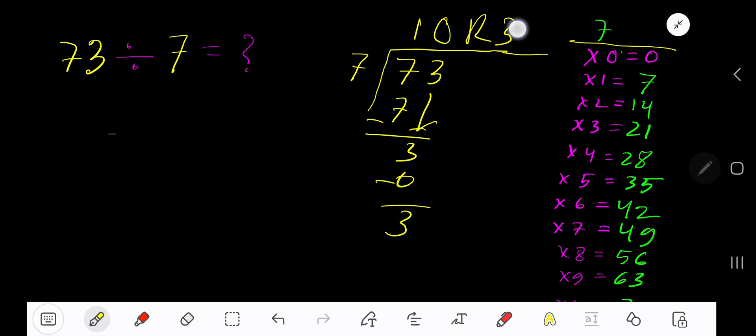If you want to write your answer in decimal form, add a decimal and zeros. Bring down the first zero. The decimal must come to the quotient directly. 7 goes into 30 how many times? 4 times. 4 times 7 is 28, subtract to get 2. Bring down another zero. 7 goes into 20 how many times? 2 times.